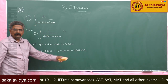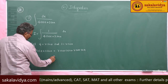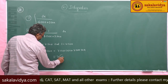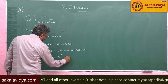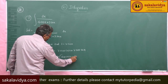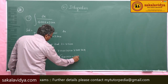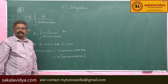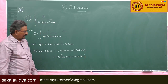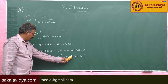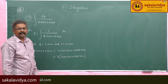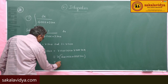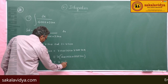Taking r as common, we get r times (sin theta cos x plus cos theta sin x). From the compound angle formula, sin A cos B plus cos A sin B equals sin(A plus B), so this becomes r times sin(x plus theta).